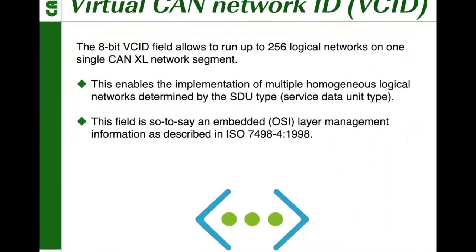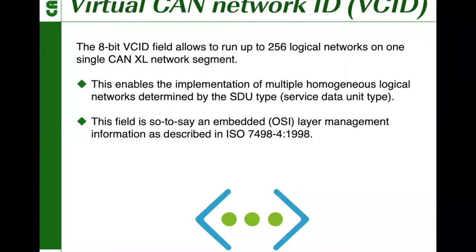Another layer management information for the higher layer is the virtual CAN network ID. With this ID, CAN-XL can run virtually several networks on the same cable. We can distinguish up to 256 logical networks, and they can use the same SDU types. This allows many protocols to run in parallel on the same physical CAN network. The SDU type and virtual CAN network ID provide the same flexibility and system options as in Ethernet.